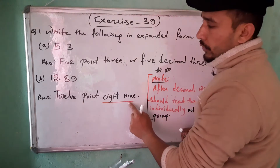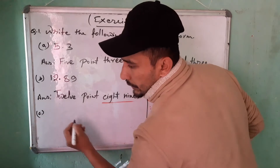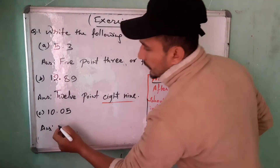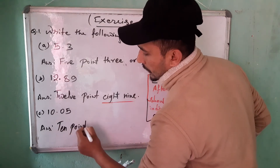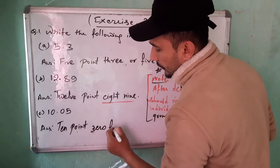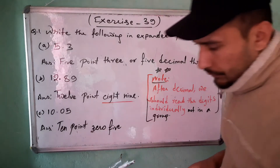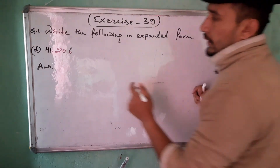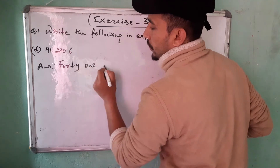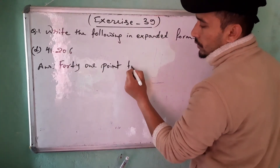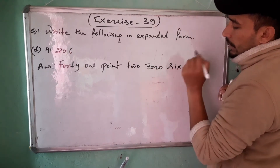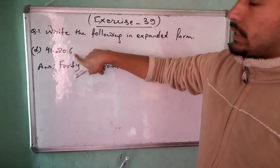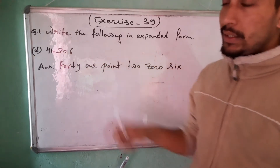So 12.89 — you read 8 and 9, not 89. Number C is 10.05. Number D is 41.206. After the decimal point, you have to read the digits individually, not in a group. Don't read 206 as a group.